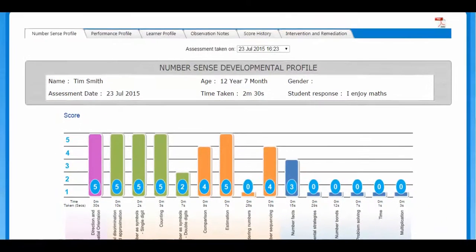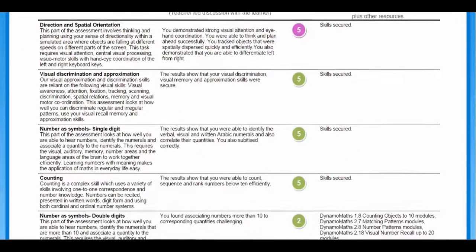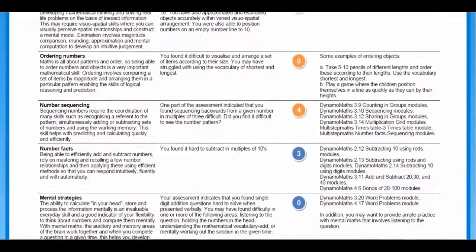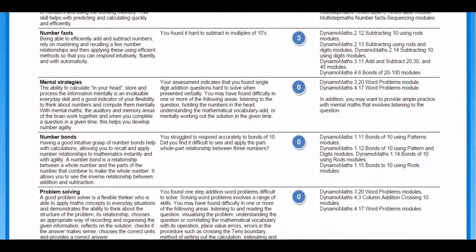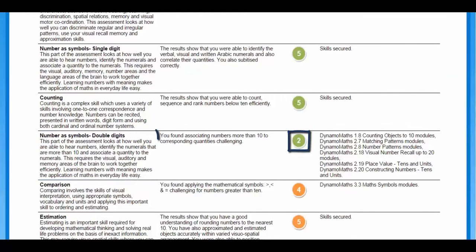By clicking on this tab, I can also view his performance profile. This is Tim's individualized intervention plan and scheme of work. This provides a description of each area of measurement, the attainment score, and a detailed comment. For example, in number as symbols, double digits, Tim scored two, and the comment explains: 'You found associating numbers more than 10 to corresponding quantities challenging.'